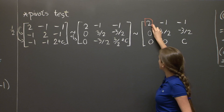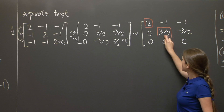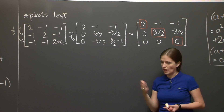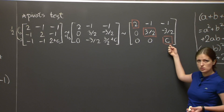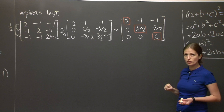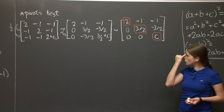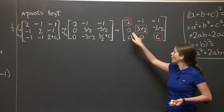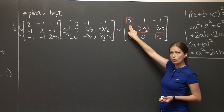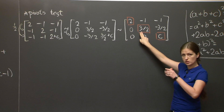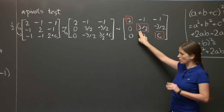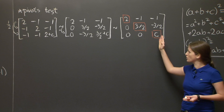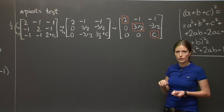So the pivots are 2, 3/2, and c. And again, the answer is the same as before: it's positive definite if c is strictly bigger than 0, and positive semi-definite if c is greater or equal to 0. But I want you to notice something: before we had determinants 2, 3, and 3c. Now as pivots we have 2, 3/2 — which is the second determinant over the first — and c, which can be thought of as 3c over 3, the third determinant over the second. Something like this is always going to happen.